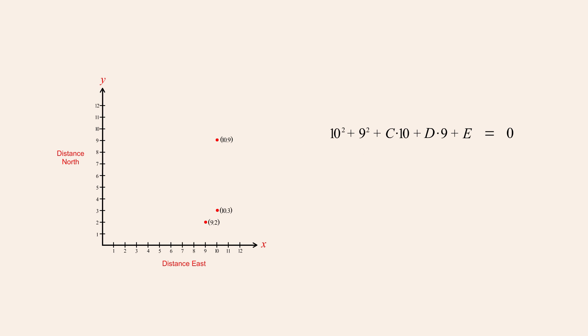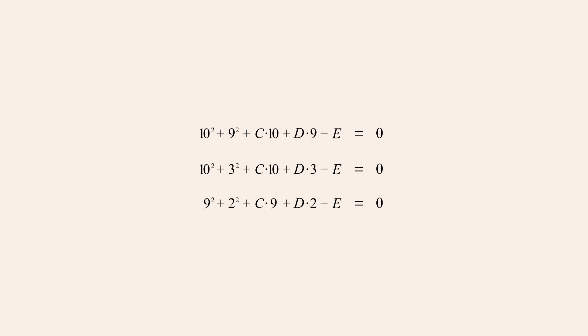If we do this for each of the three points, we will create three true statements. This gives us a system of three linear equations in three variables: c, d, and e. The next step is to write these equations in standard form.